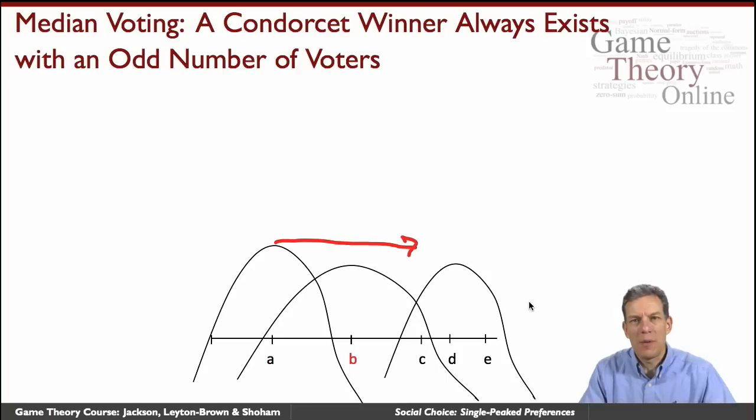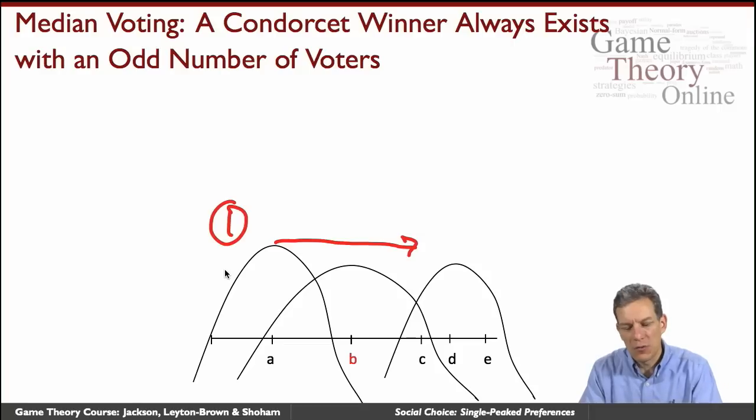So by misrepresenting their preferences, this person one would actually do worse. So you can verify that that's also two for three or any individual. The only way you're going to be able to make a difference is to change the median, which means you have to flip to the other side, which is something you're generally not going to want to do.